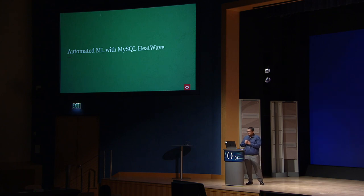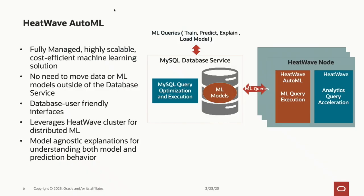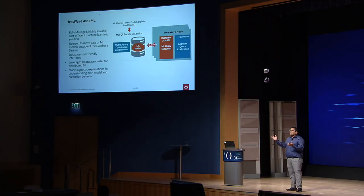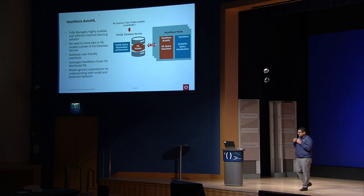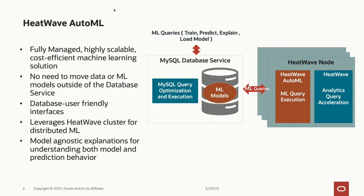HeatWave AutoML is a fully managed, scalable, cost-efficient machine learning solution. It is fully managed as part of the MySQL HeatWave cloud service — you don't need to worry about management of the service. It is highly scalable: today if you have 100,000 nodes in your training data, you go with maybe one HeatWave node. As your data keeps increasing, you add more HeatWave nodes. Training and explanations are fully scalable — as you have more data, you add more nodes and your runtime stays the same.